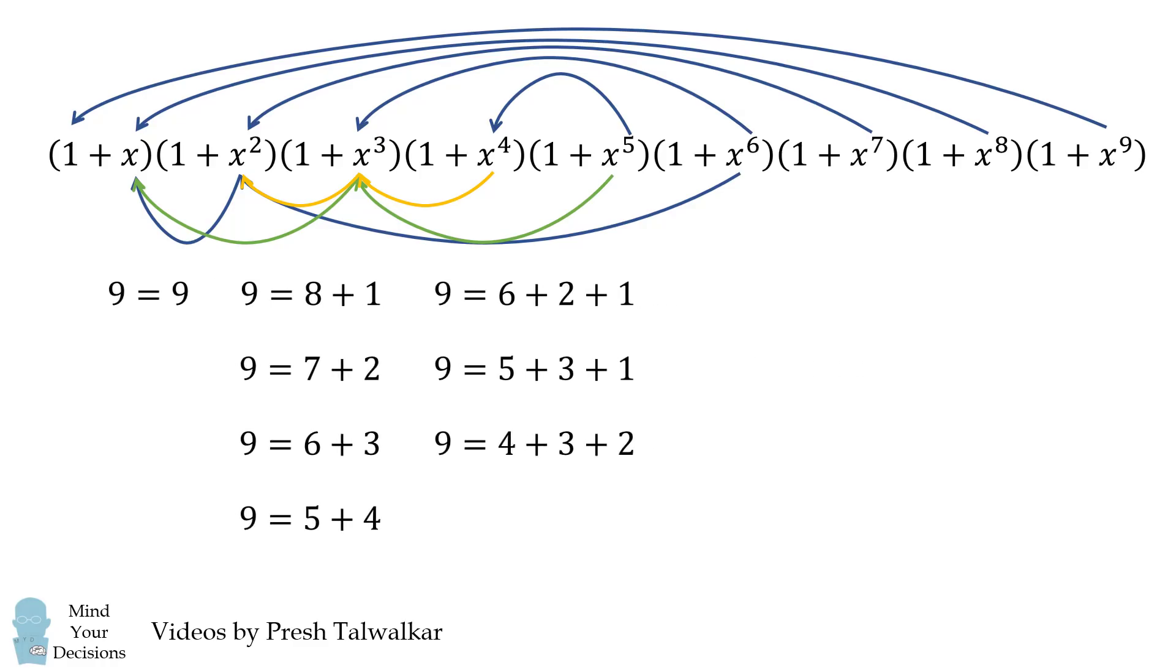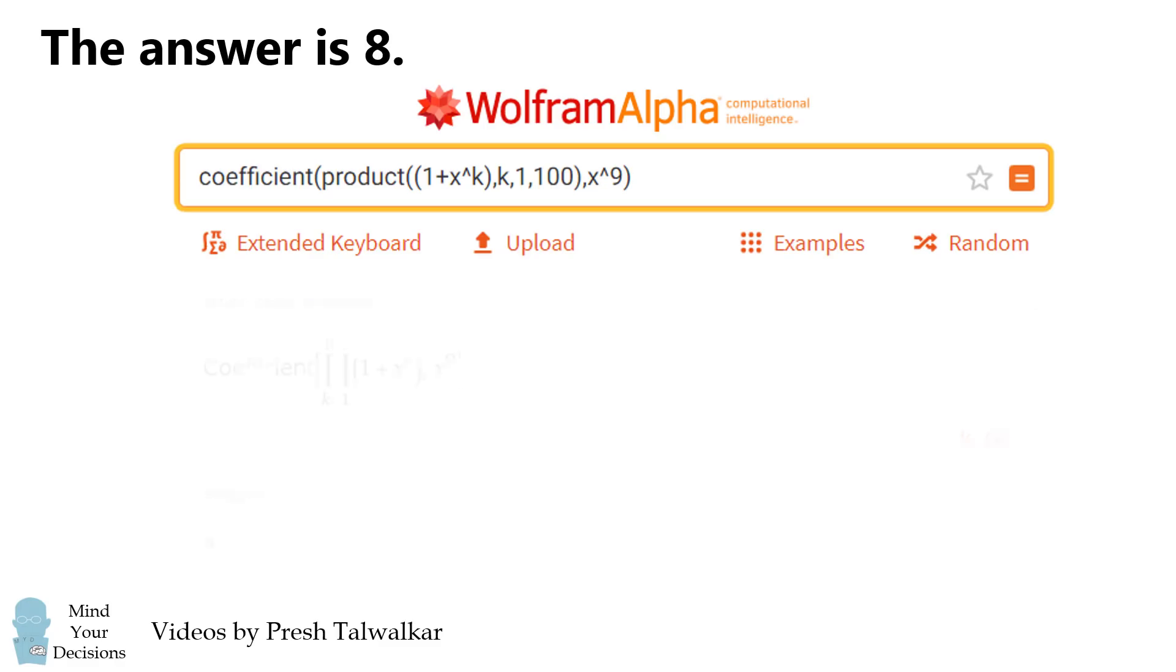We count these and there are a total of 8 ways, and that's the answer. Just for fun, we can input this into Wolfram Alpha and it will verify that the answer is 8. Incredible!